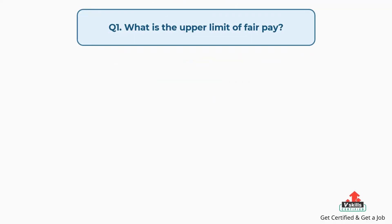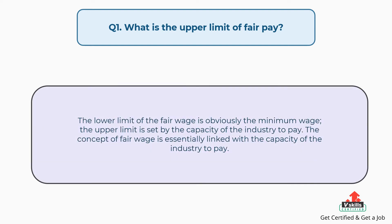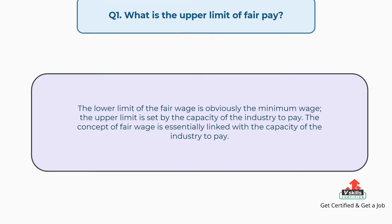Question number one: What is the upper limit of fair pay? The answer is, the lower limit of the fair wage is obviously the minimum wage; the upper limit is set by the capacity of the industry to pay. The concept of fair wage is essentially linked with the capacity of the industry to pay.